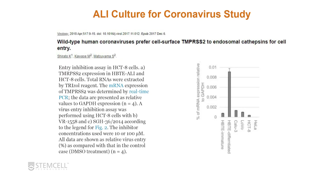ALI cultures have also been used for coronavirus studies. In this paper, the authors looked at the expression of the receptor TMPRSS2, which is one of the receptors for coronaviruses. They looked at expression in different cell lines and in human primary epithelial cells (HPEs) that are well differentiated or immature, and found that mRNA expression of TMPRSS2 was much greater in highly differentiated HPEs. This demonstrates that mature ALI cultures from primary epithelial cells express this protein and can be used for further coronavirus research.